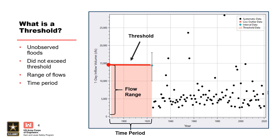A perception threshold defines the boundary between floods above a threshold that would have been observed and documented if they had occurred, and floods below the threshold that occurred but were not observed and documented over a defined period of time. A perception threshold is defined by a flow value and a period of time. In this plot, a perception threshold is shown at an inflow volume of 14,400 CFS.